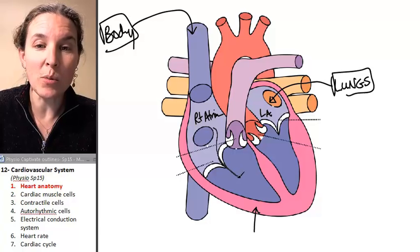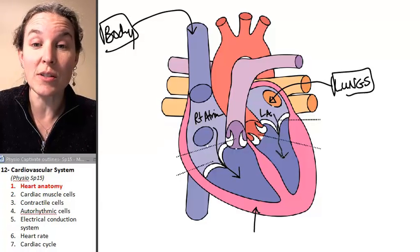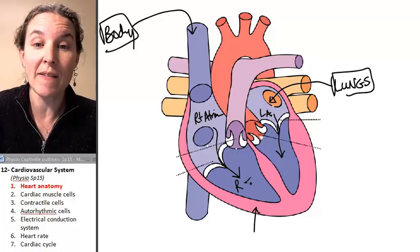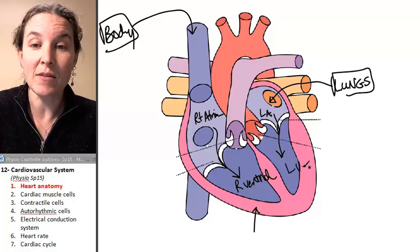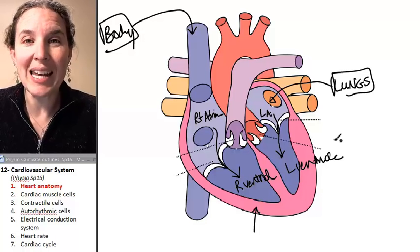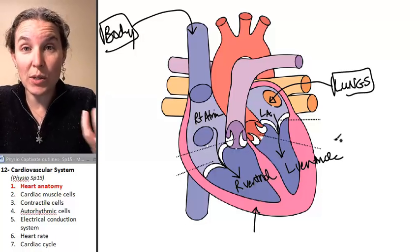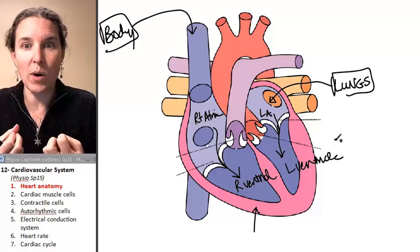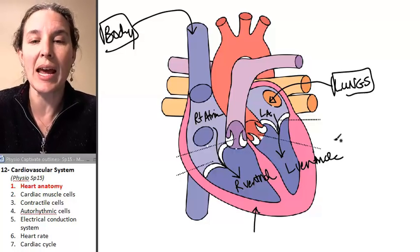From the atria, blood will travel into the ventricles. So this is my right ventricle and my left ventricle. So the ventricles are pumping blood out. So atria receive blood from the body somewhere, and ventricles pump blood out.